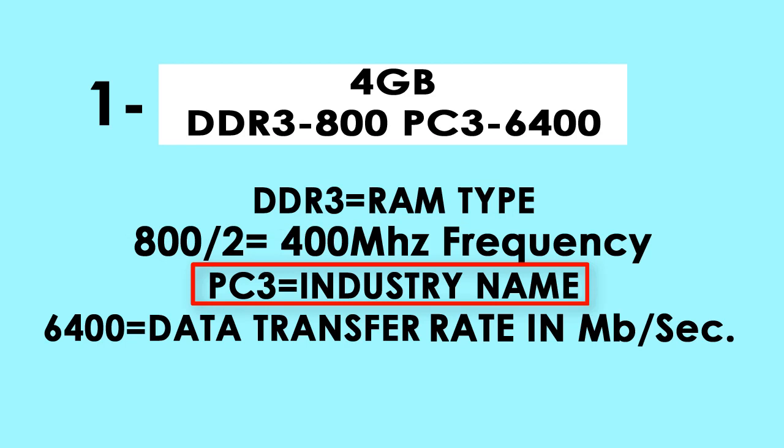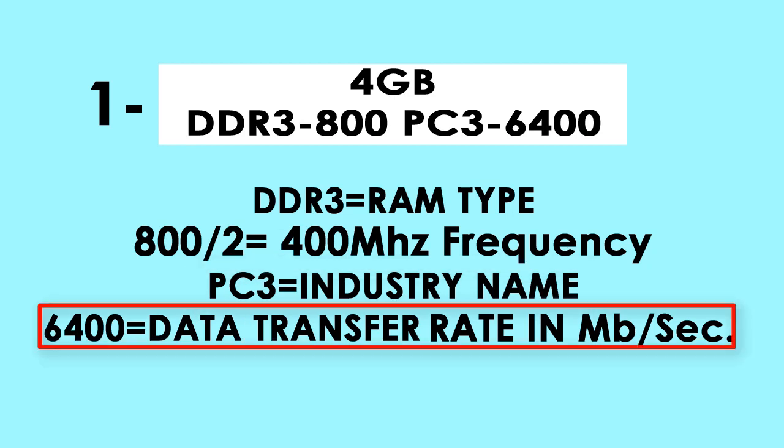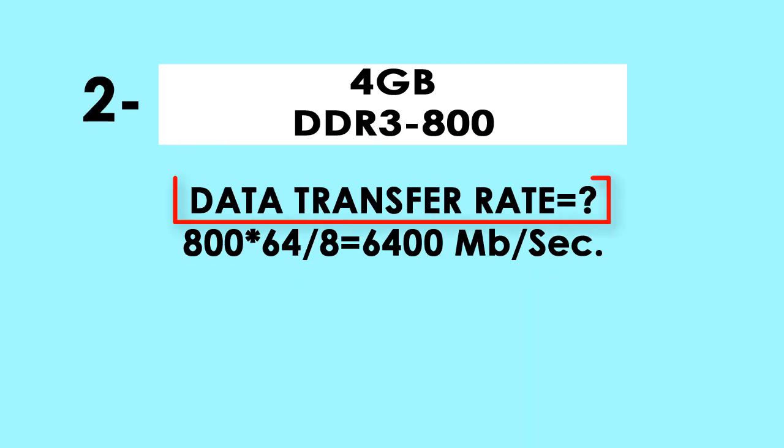PC3 is an industry name but also indicates the DDR3 RAM generation. And 6400 is the data transfer rate in megabytes per second.